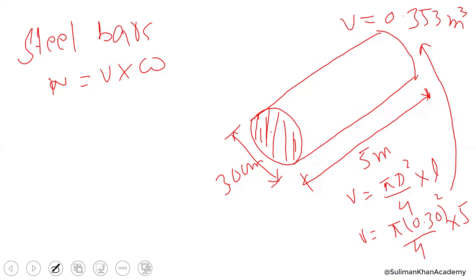Now we can put this volume into the formula. W equals the volume, which is 0.353 times the unit weight. It's important to know what type of steel this is. Is it cast iron? Is it wrought iron?